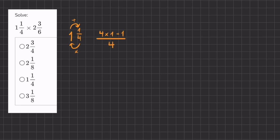And our denominator stays the same. It's going to be 4. So we have 4 times 1 is 4 plus 1. That is 5 over 4.